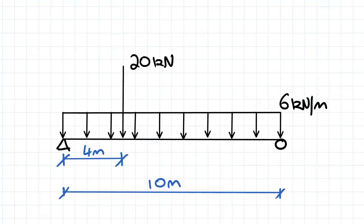So let's have a quick look at the question. We've got a simply supported beam here with a length of 10 meters. It's got a uniformly distributed load of 6 kN per meter acting over it and a point load of 20 kN acting 4 meters from the left pin support.